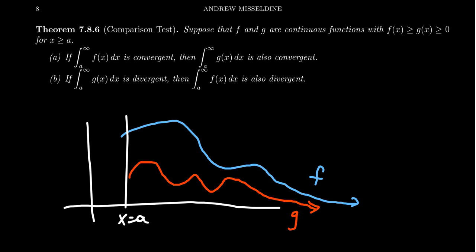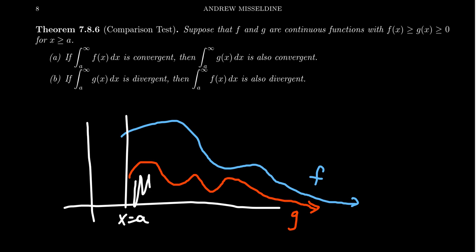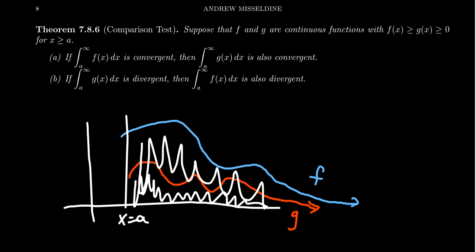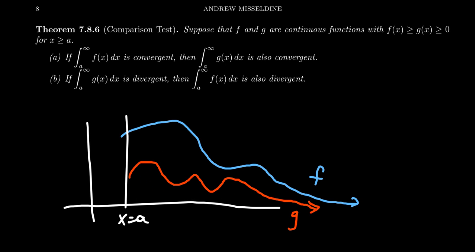But in contrast, if the integral from a to infinity of g of x dx is divergent, then the integral from a to infinity of f of x must also diverge. Because these functions are both positive, the only way they could diverge is if they go off towards infinity. So if the area under the smaller one is infinite, then the area under the bigger one must also be infinity, because there's no real number that is greater than infinity.